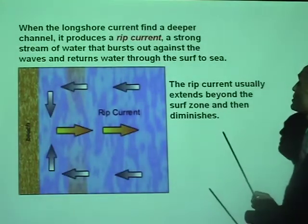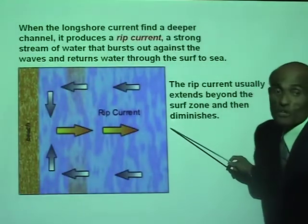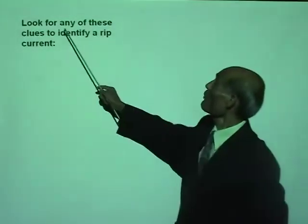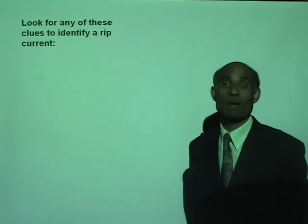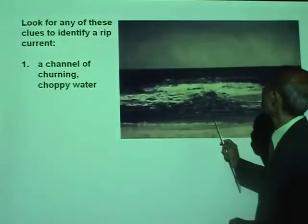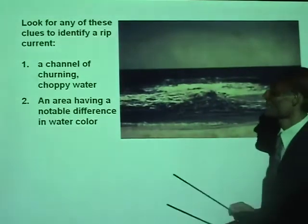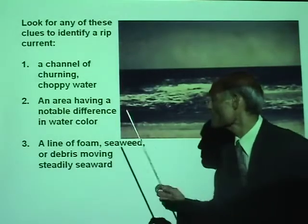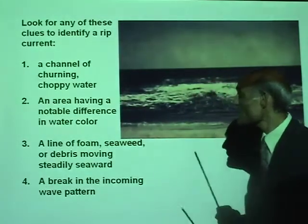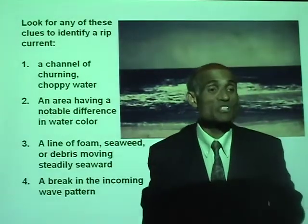The rip current usually extends beyond the surf zone and then diminishes. Look for these clues to identify a rip current: a channel of churning choppy water, an area with a notable difference in water color, a line of foam, seaweed, or debris moving steadily seaward, and a break in the incoming wave pattern.